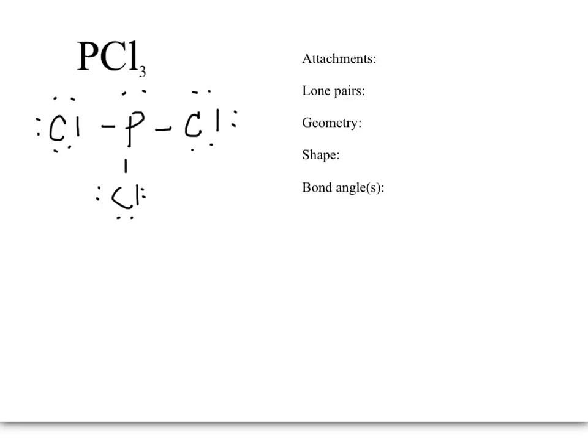Next we have phosphorus trichloride. There are three chlorines attached to the central atom. And then there's also one lone pair on the central atom. We count pairs. So there's just one lone pair. Three plus one equals four.